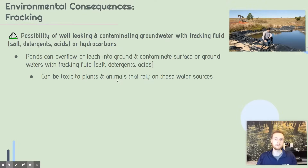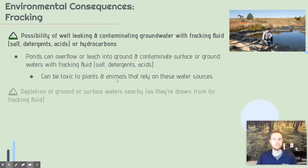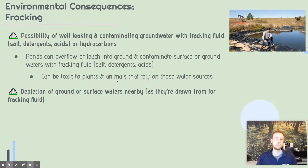Animals and plants relying on groundwater or local ponds and rivers for drinking water can be harmed, since contaminants specifically including salt, detergent, and acid could all be toxic to those organisms. Another problem is groundwater depletion — the using up of groundwater and surface water as it's drawn to be used in the fracking fluid. Fracking fluid is mostly water and requires enormous quantities for a single well, which can make local water sources run out.